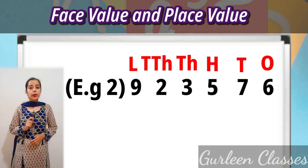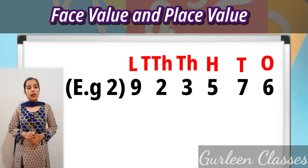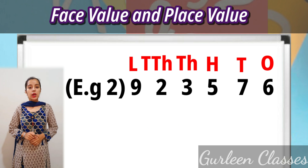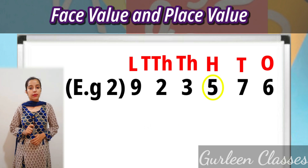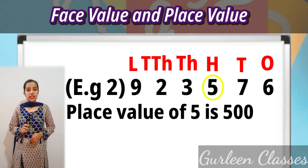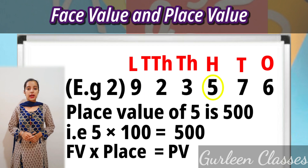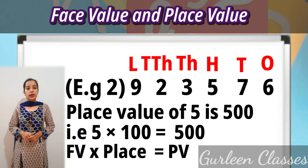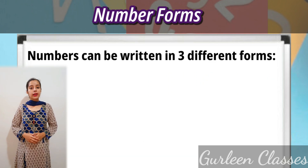Example number 2: let's take the number 923576. We have to find the place value of 5. The place value of 5 is 500 — that is 5 into 100 equals 500.